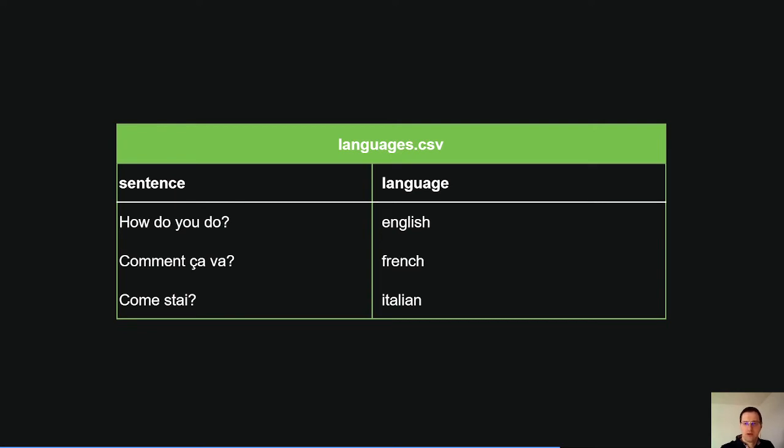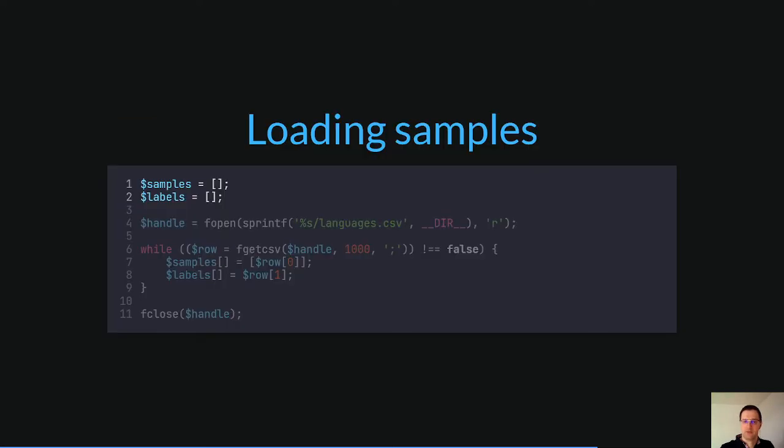For this example app, I use a CSV file with more than 50 samples to get a decent result. The first column contains a sentence and the second column the language name. The first step is to create an empty array for the samples and labels. Then read all lines from the CSV file and append it to that specific array.